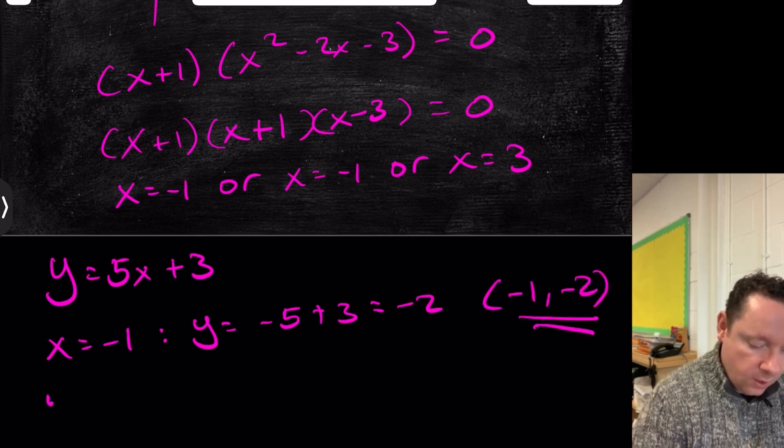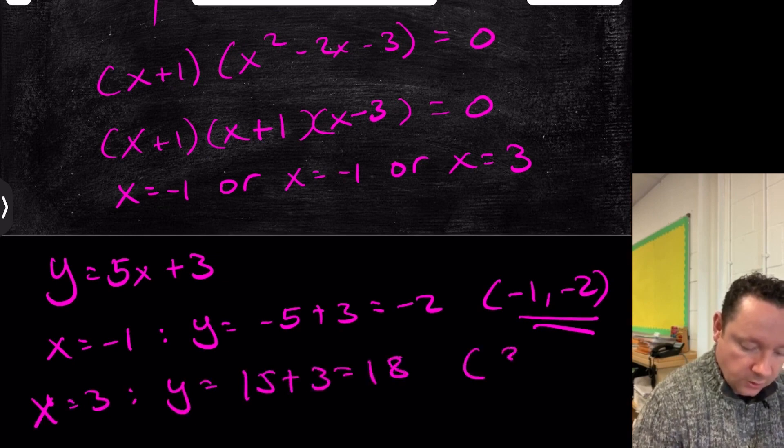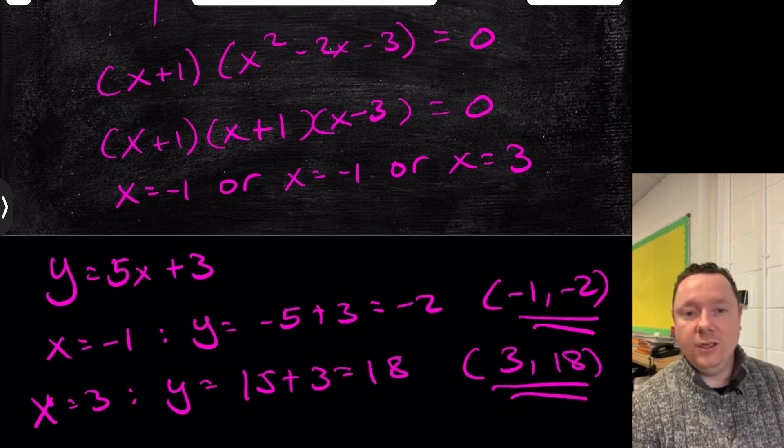And the second one, when x is equal to 3, y equals 5 times 3 is 15 plus 3, which is 18, so our next point is 3 and 18. And there's our second point of intersection.